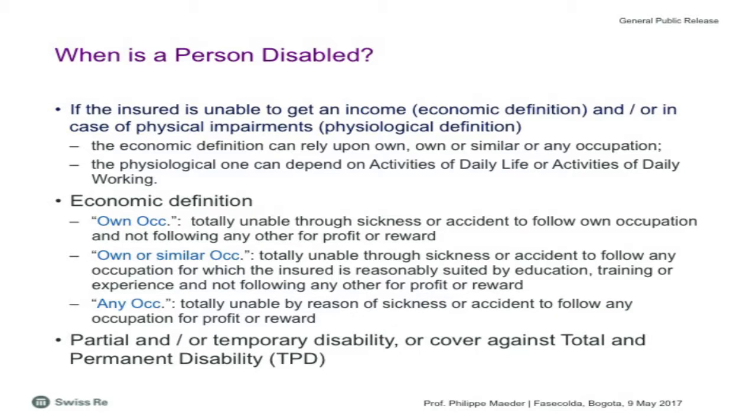In the economic definition, some products rely on own occupation — the person being totally unable, through sickness or accident, to follow their own occupation. While for own or similar occupation, they are totally unable through sickness or accident to follow any occupation for which the insured is reasonably suited by education, training, or experience. Any occupation means truly unable to have any occupation at all. These three definitions make a big difference, and products can combine those definitions.